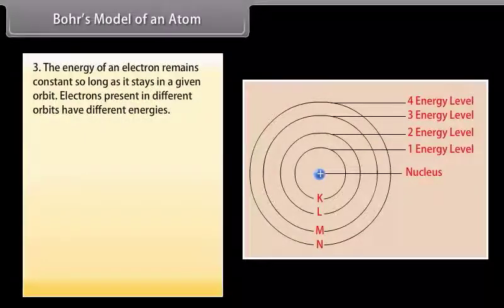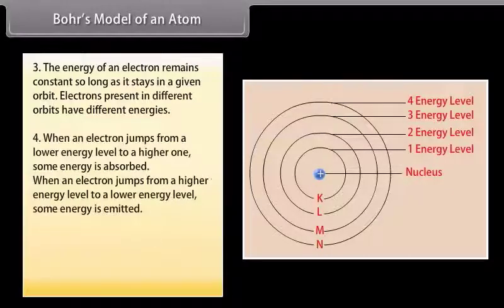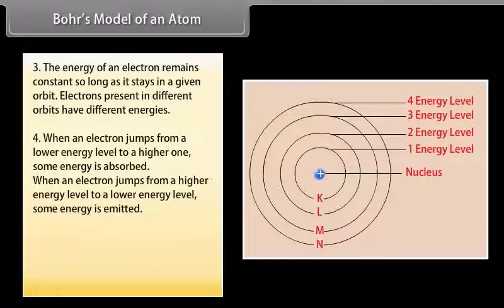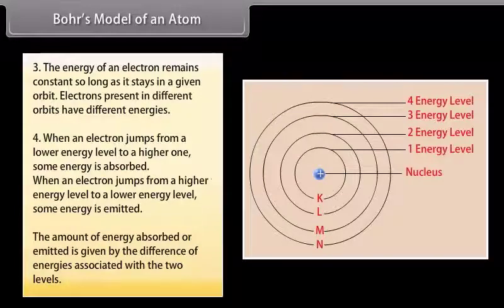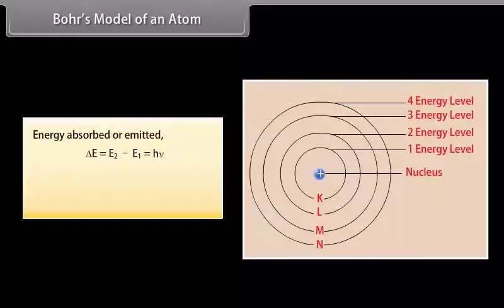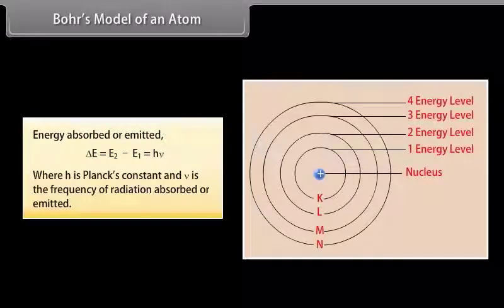3. The energy of an electron remains constant so long as it stays in a given orbit; electrons present in different orbits have different energies. 4. When an electron jumps from a lower energy level to a higher one, some energy is absorbed. When an electron jumps from a higher energy level to a lower one, some energy is emitted. The amount of energy absorbed or emitted is given by ΔE = E₂ − E₁ = hν, where h is Planck's constant and ν is the frequency of radiation absorbed or emitted.